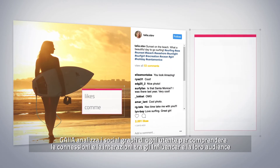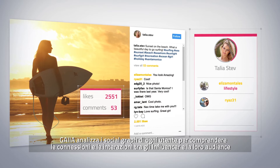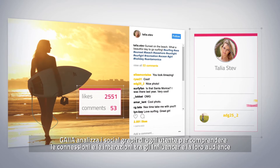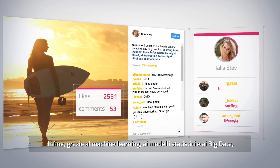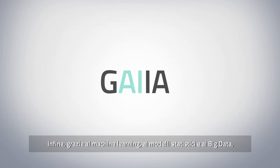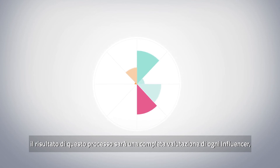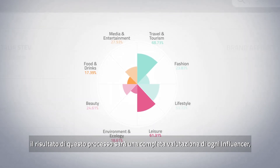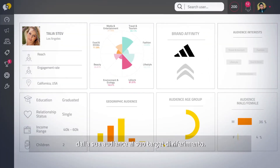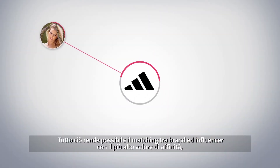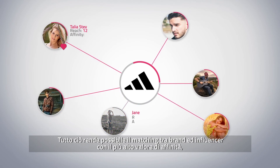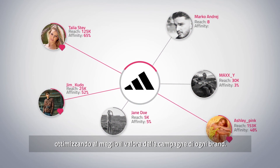Gaia analyzes a user's social graph to understand the connections and interactions between influencers and their audience. Finally, thanks to machine learning, statistical models and big data, the result of this process is a complete valuation of an influencer and effective audience analysis and targeting. This allows us to match influencers and brands with the highest affinity, maximizing campaign value for brands.